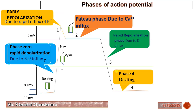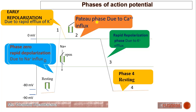Now we will see the phases of action potential. Generally there are five phases. Phase 0 is known as rapid depolarization and it is due to sodium influx. Phase 1 is repolarization due to rapid efflux of potassium. Phase 2 is a plateau phase due to calcium influx. Phase 3 is a rapid repolarization phase due to potassium efflux. And lastly, phase 4 is the resting stage.